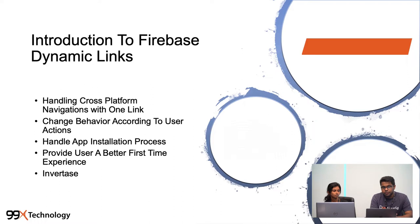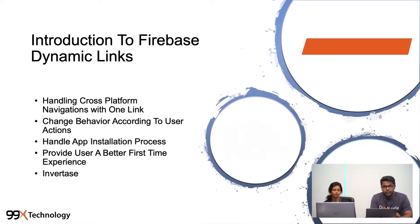The fourth advantage is providing users a better first-time experience. When a user is coming through a mobile advertisement, promotion, coupon, or website link, we can customize the link — we can specify what the user has to be shown. If he or she is coming from this link, it has to be designed accordingly.